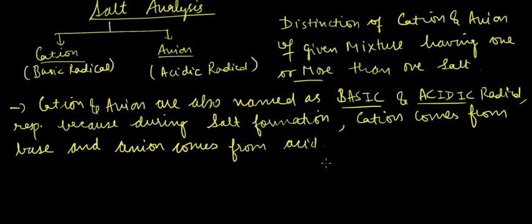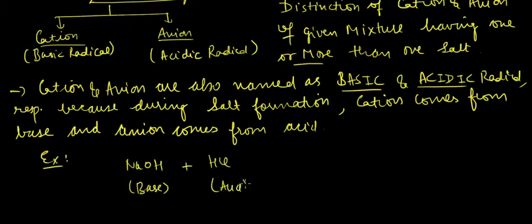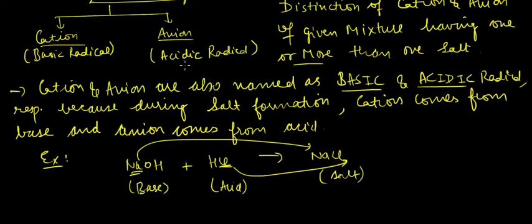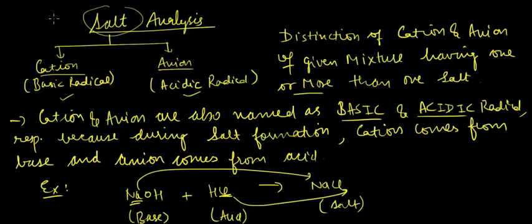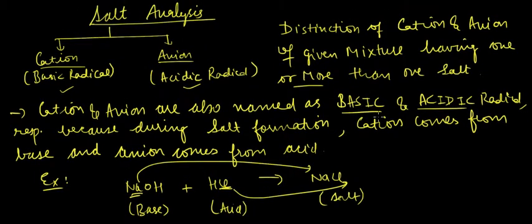If we look at the example of salt formation, we have NaOH as the base and HCl as the acid. It forms NaCl salt. So cation comes from base and anion comes from acid. Anion is called acidic radical and cation is called basic radical. So this is how a salt is formed. NaCl plus H2O is formed.